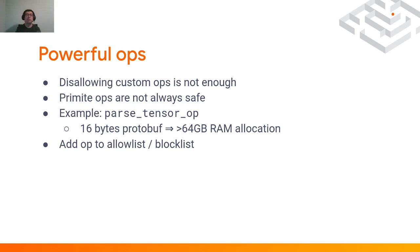To prevent scenarios where this could result in a denial-of-service attack, there is the option to add operations to an allowlist or blocklist in TensorFlow. A security-conscious user, before running the saved model, would run a tool called SavedModel CLI to scan what operations exist in TensorFlow, what their capabilities are, and then decide if they want to run the model or not.